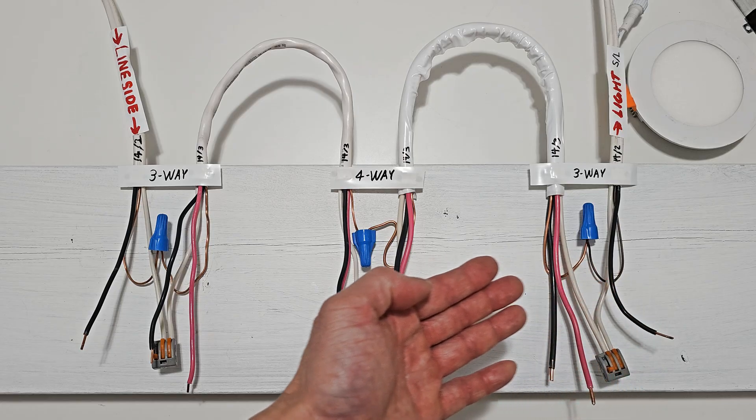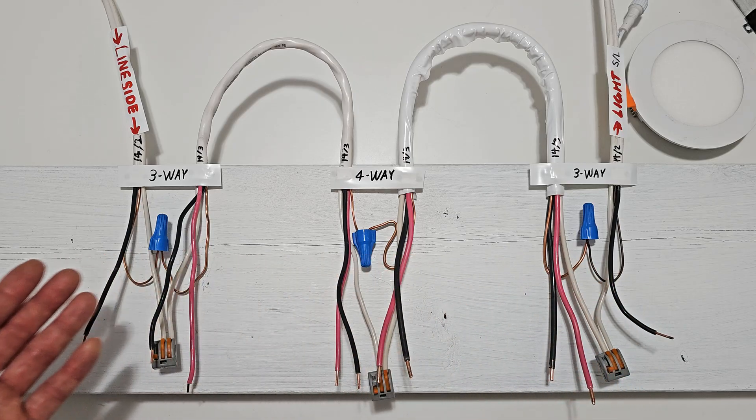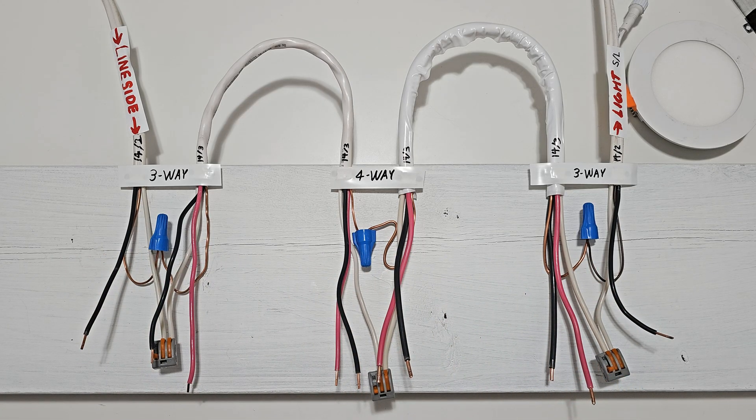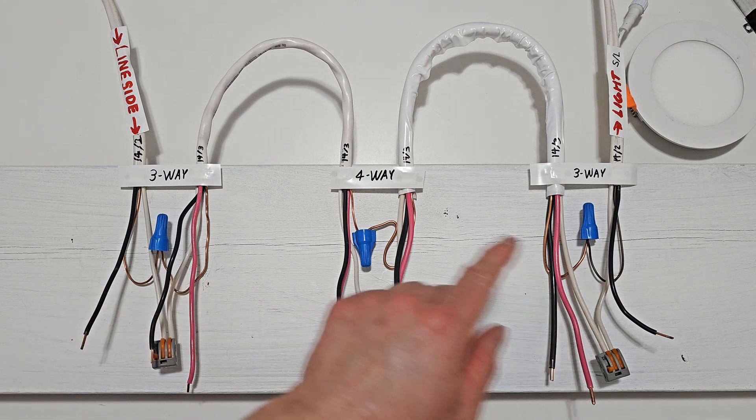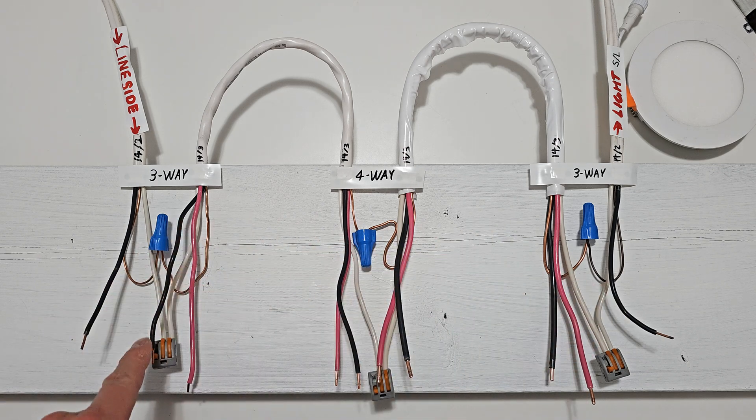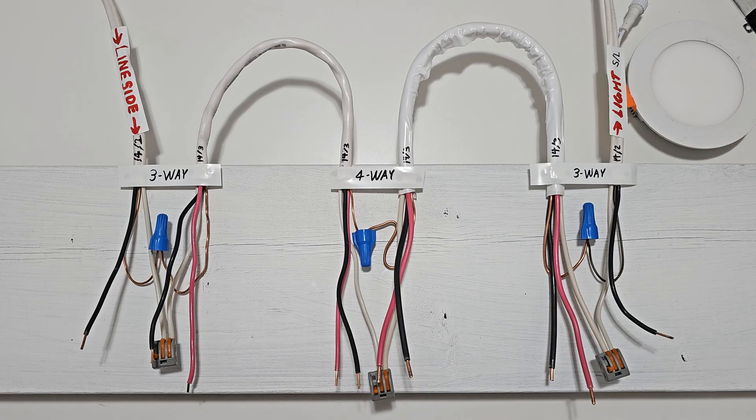Right here I made a simple four-way circuit where you can see all on one board. For your three electrical boxes, you want to separate all the wires, but you can leave the grounds and the neutrals still spliced together.